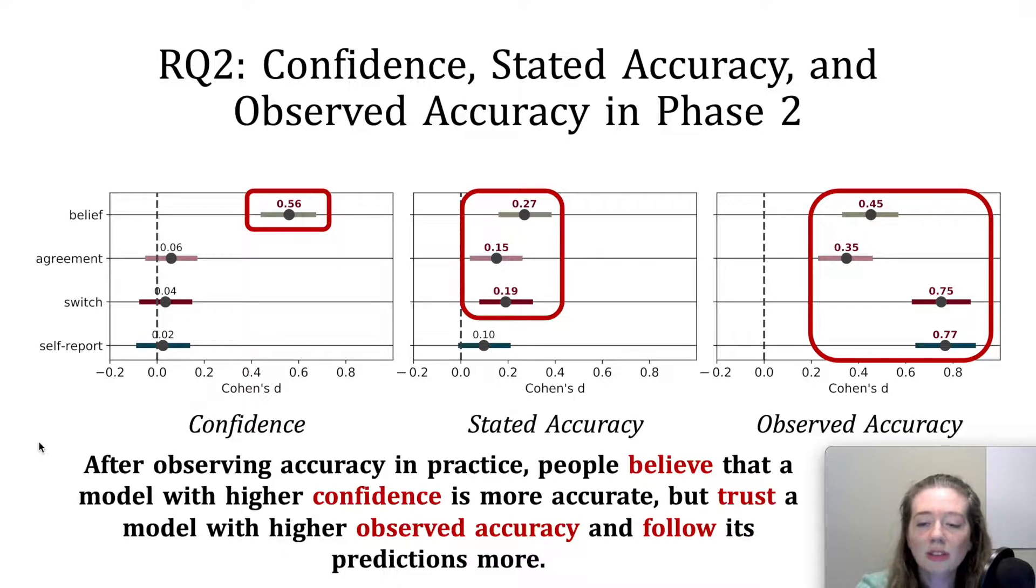Altogether, while the level of confidence of the model had the greatest impact on subjects' belief in the model's accuracy, observed accuracy of the model had the greatest impact on the other three trust measures.